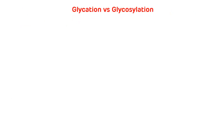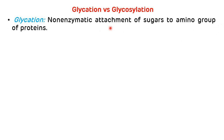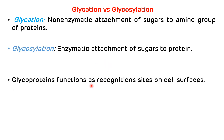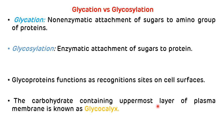Now we will see the difference between glycation and glycosylation. Glycation is the non-enzymatic addition of sugar to the amino group of proteins. It occurs randomly in the blood. One example of glycation is HbA1c, also called glycated hemoglobin — the test used for monitoring blood sugar levels in patients with diabetes mellitus. Glycosylation is the enzymatic attachment of sugars to proteins, occurring as a post-translational modification. Glycoproteins function as recognition sites on cell surfaces, and the carbohydrate-containing outermost layer of the plasma membrane is known as the glycocalyx.